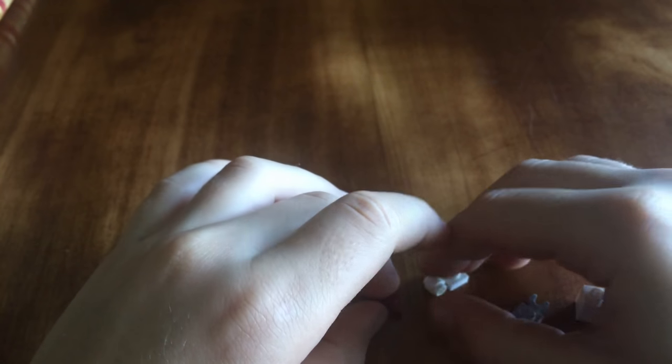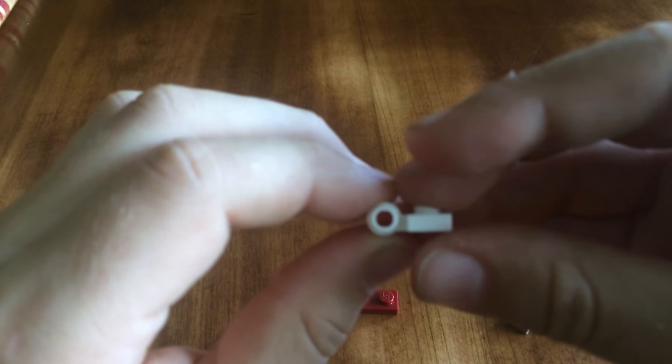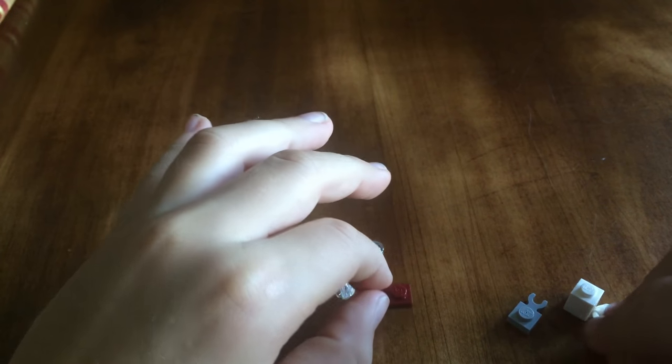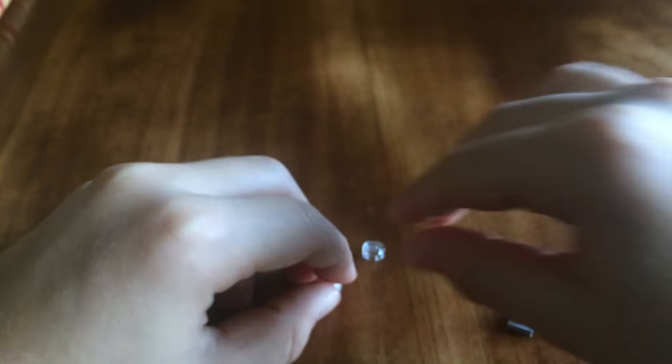Then you'll need a 1x1 with a little hole, right there. Then you'll need a 1x2 piece. Then you'll need two 1x1s.